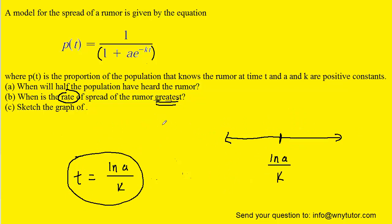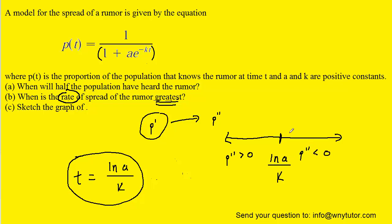To confirm that this value of time actually does maximize the p′ function, we perform a derivative test. We take a value less than our critical value and a value greater than it, and plug each into the derivative of our function — which in this case is the second derivative. The second derivative is positive for a value immediately to the left of the critical value, and negative for a value immediately to the right. That means the p′ function increases up to that value and then decreases beyond it, which produces a maximum — confirming the answer to part b.